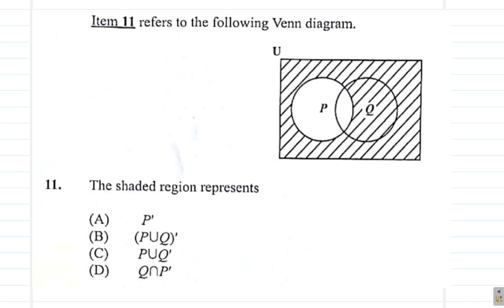P union Q complement. Now, Q complement would, if you are shading P union Q complement, right? You're going to have P and Q.